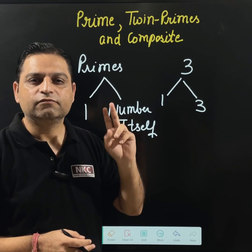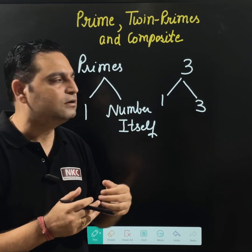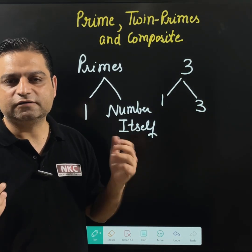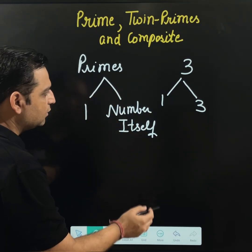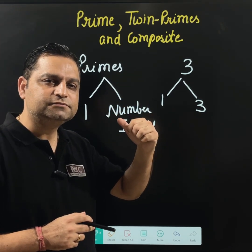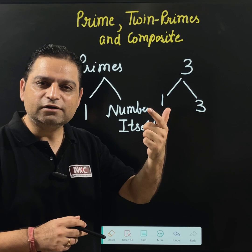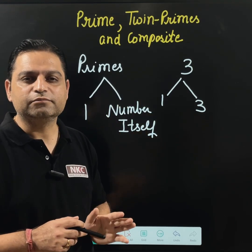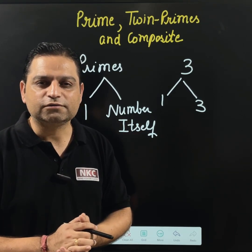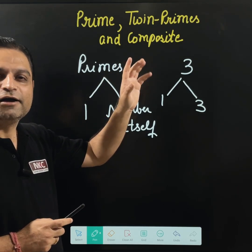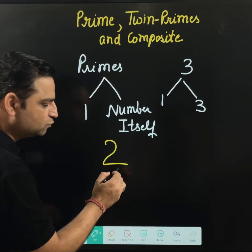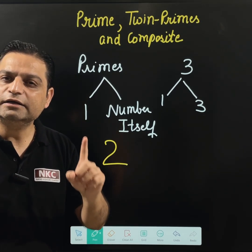Do remember it. It can have only two factors. In easy words, we say that it is not divisible by any other number other than 1 or the number itself. Now, 3 is the prime number. Can you think if any even number is a prime number? Because we know that even numbers are divisible by 2. But still there is an even number which is prime. Quickly write it and let me know. The first prime number is 2, and 2 is the only even prime number. Do remember.